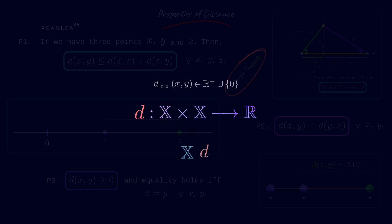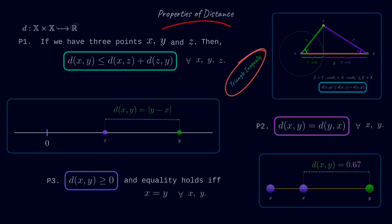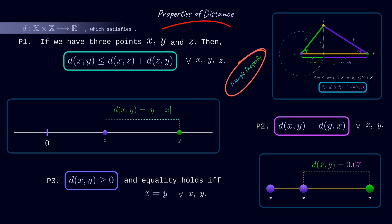And the function d maps X cross X to R satisfying these following three conditions. And conversely, if any such defined function satisfies all these conditions, it is called the metric. And the domain together with the metric is called the metric space. The idea of metric and metric spaces are abstractions of the concept of distance in Euclidean space.